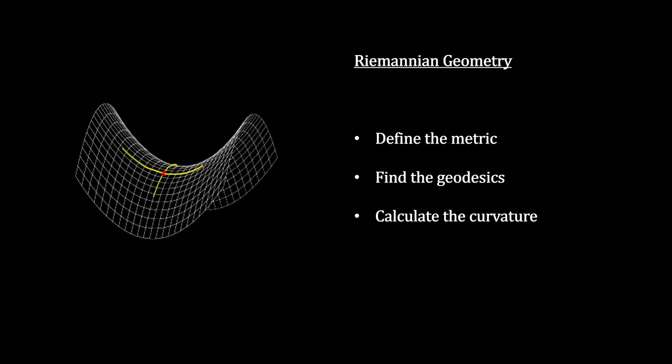Riemann developed the mathematics for this generalized space with any number of dimensions. Basically, he came up with a three-step process. First, we define a metric for the space that allows us to measure distances. Second, we use the distance metric to find the geodesics for the space. And third, we use the geodesics to define what we mean by curvature.